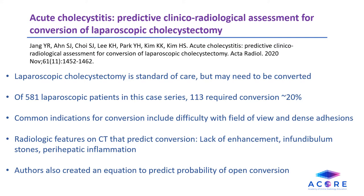The authors looked at preoperative imaging features that correlated with the need for open conversion and found that lack of gallbladder enhancement on CT, gallstones in the infundibulum, and peripathic inflammation had a significant association with open conversion. The authors also assigned different values to the different variables and created an equation to predict the probability of open conversion.